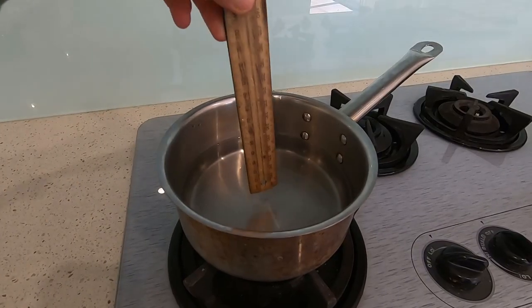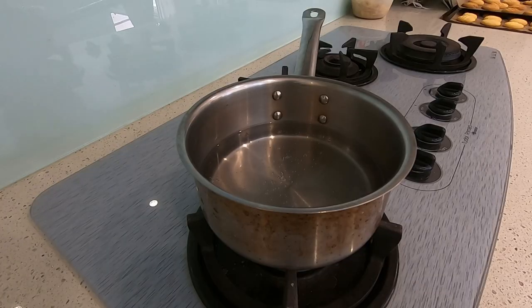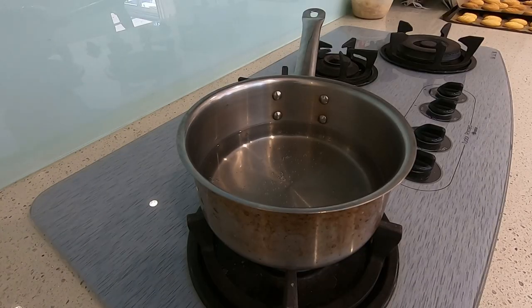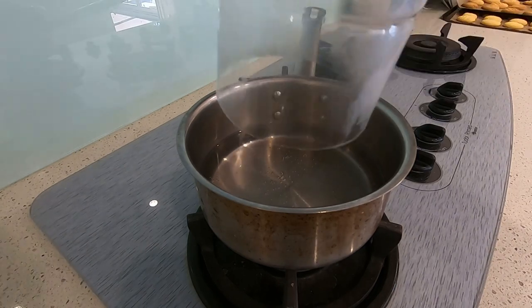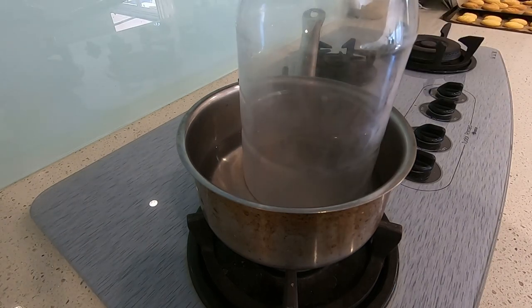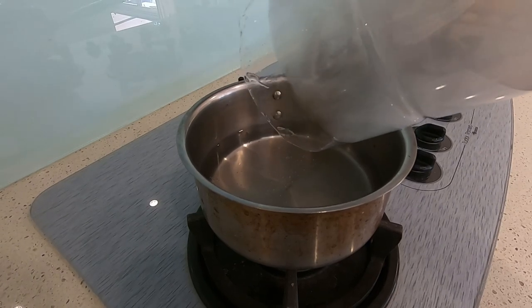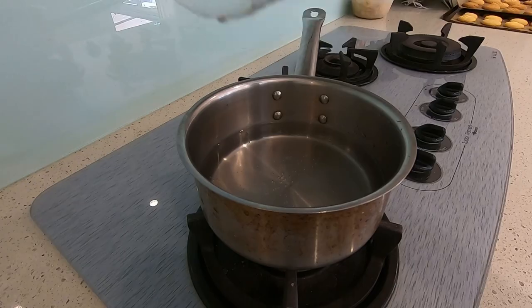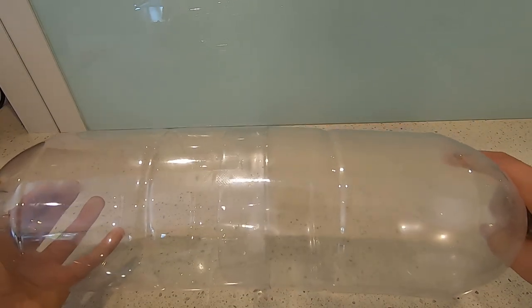Fill a saucepan with about two and a half centimeters of water. Once your pan has reached about 75 degrees celsius, get one of your bottles and dip it in for a couple of seconds. Now take it over and test fit it. The bottle should be a pretty snug fit.